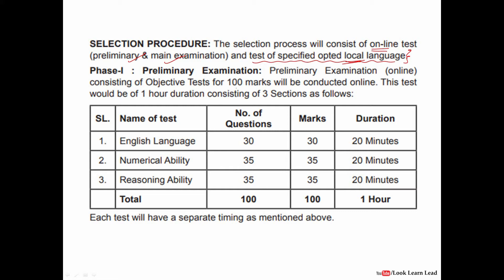The preliminary exam is of 100 marks for one hour. English has 30 questions for 30 marks, reasoning has 35 questions for 35 marks, and quant has 35 questions for 35 marks. Unlike IBPS PO and IBPS Clerks, there is sectional timing here — 20 minutes are allotted for every section.